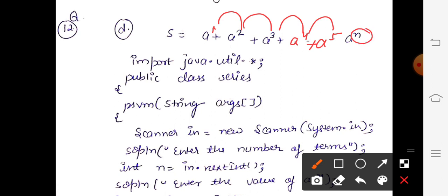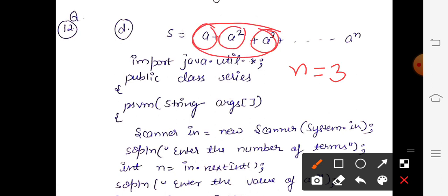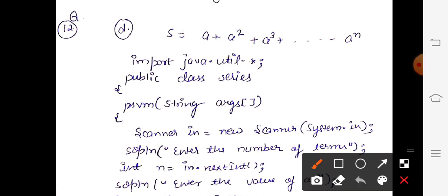n is some value you have to provide. For example, if n is 3, the number of terms is 3, so you will get the sum of only 3 terms — first, second, and third. If you take n as 4, then a⁴ will also be included in the sum. That means the sum of terms depends on the value of n.